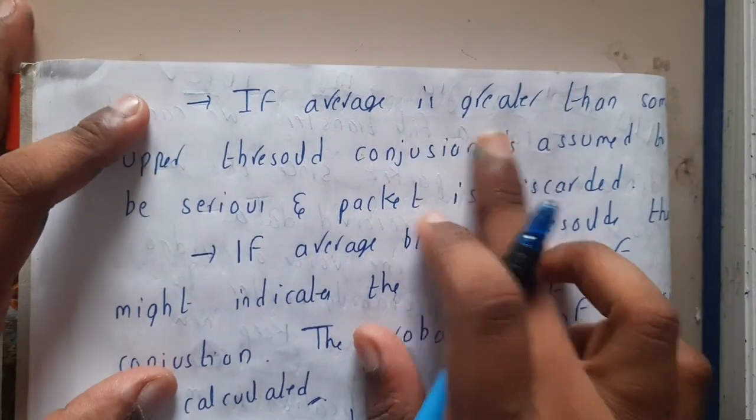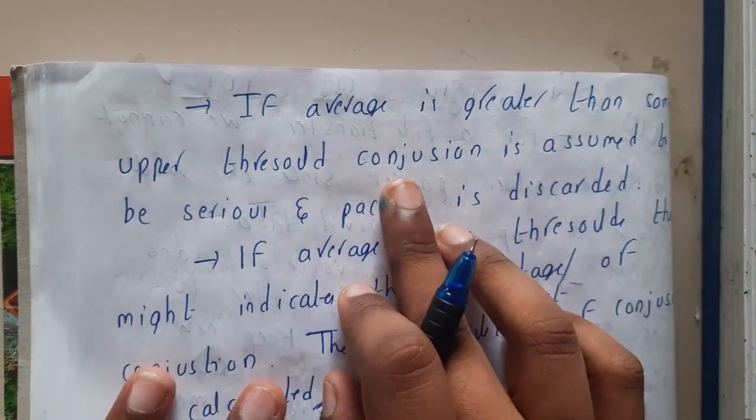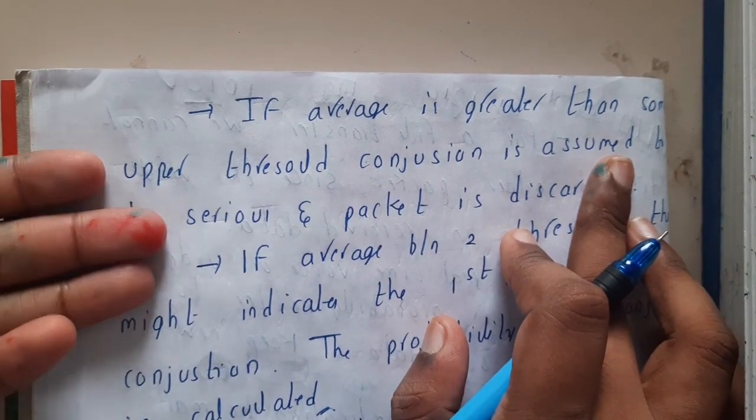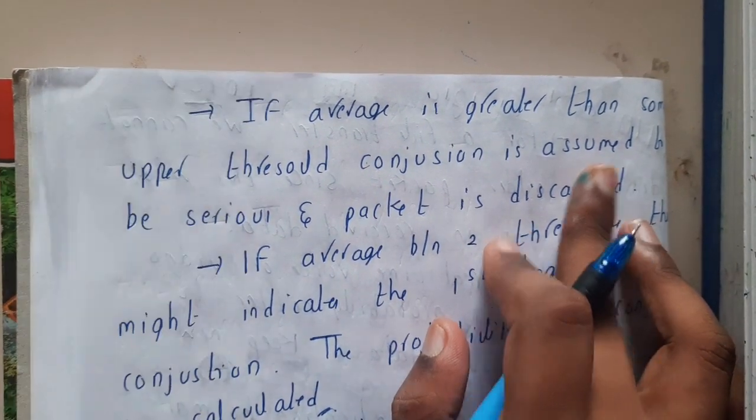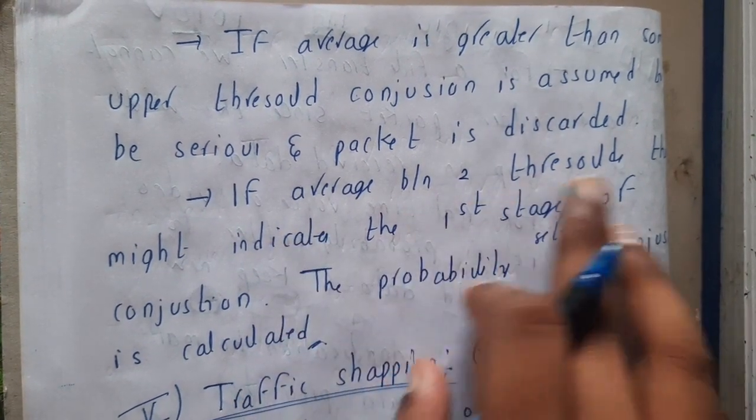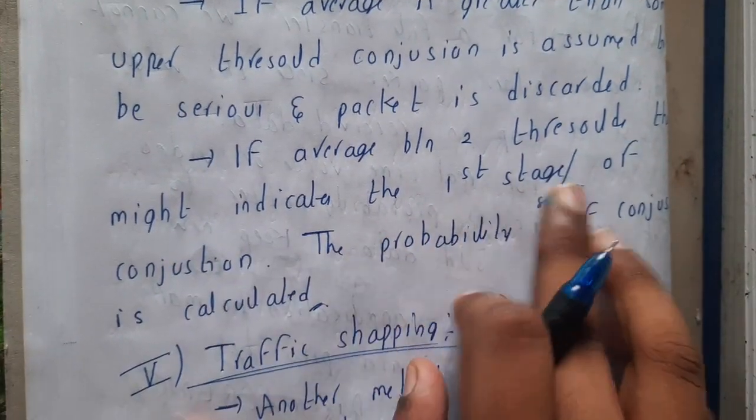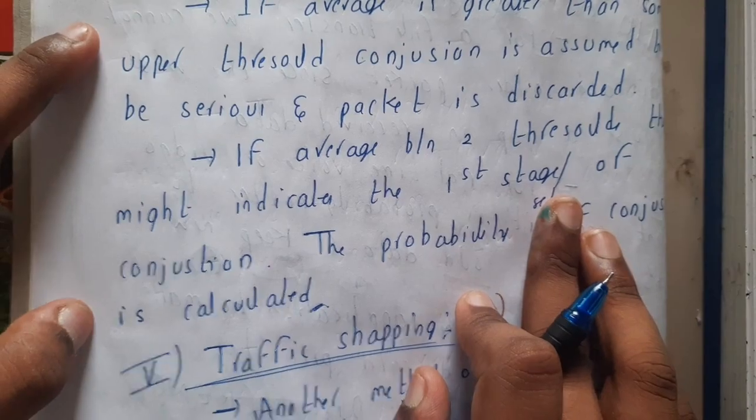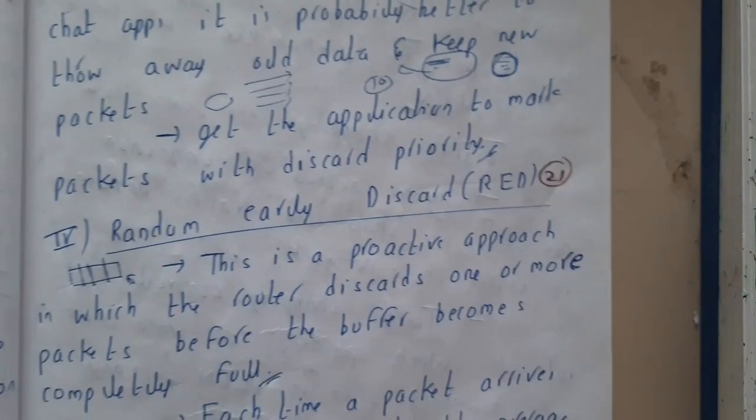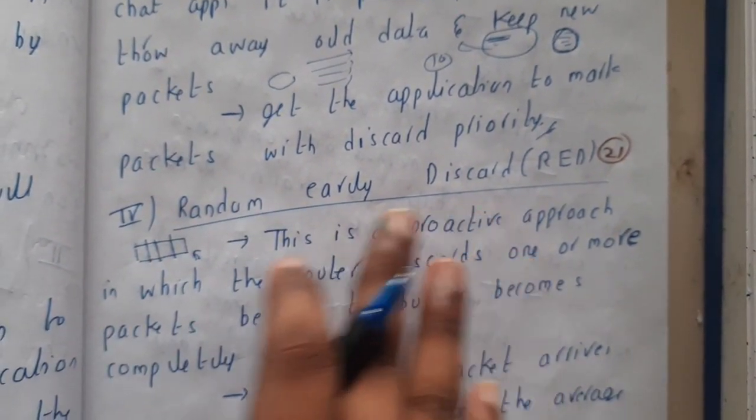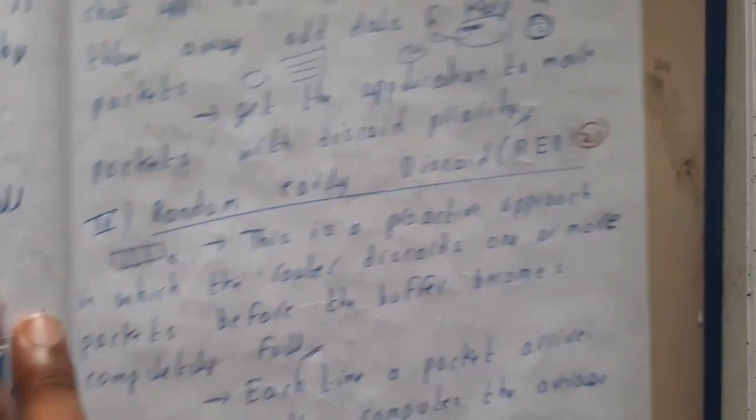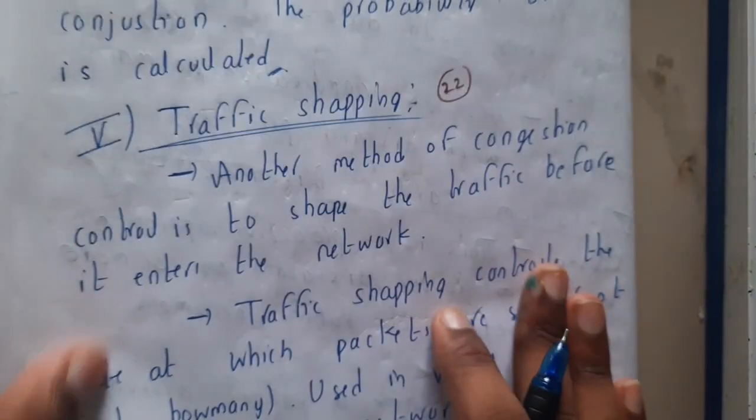If the average is between two thresholds, it might be indicated as the first stage. I hope everyone got some basic idea about this. This is Random Early Discard, popularly called RED.